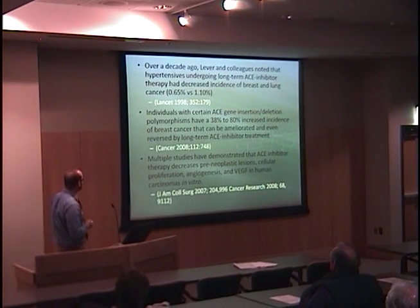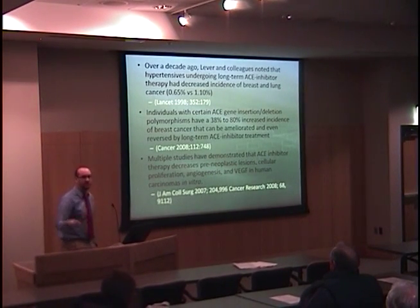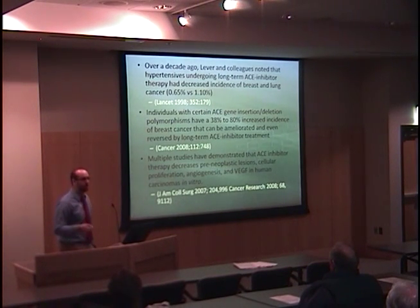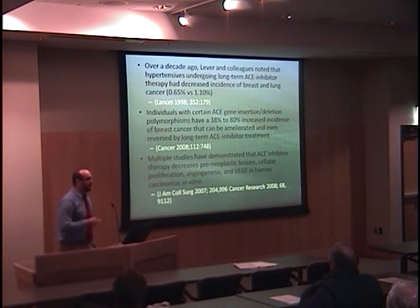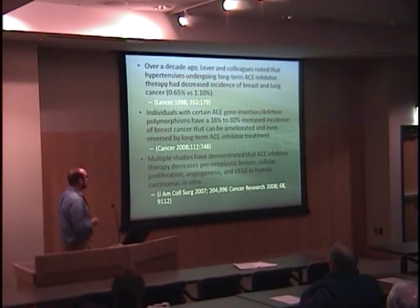Fast forward about ten years, and we find that individuals with certain ACE gene insertion-deletion polymorphisms, which lead to increased ACE activity, have a 38 to 80% increased incidence of breast cancer. This increased risk can be ameliorated or even reversed by ACE inhibitor therapy. So you could imagine going to your doctor with a strong family history of breast cancer and being given an antihypertensive — which is what this study appears to suggest may benefit these certain individuals.